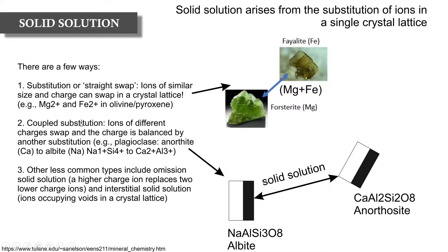The second type is coupled substitution, whereby ions of different charges swap, and because they have different charges, a second swap must be made to balance the charge. A good example is the plagioclase solid solution series, with calcium-rich anorthite and sodium-rich albite as end members. To move from anorthite toward albite, we replace Ca²⁺ with Na⁺, and because sodium is 1+ and calcium is 2+, we complete a second substitution — replacing Al³⁺ with Si⁴⁺ — to balance the charge. That is why anorthite has two aluminium ions and two silica ions, while albite has one aluminium ion and three silica ions.